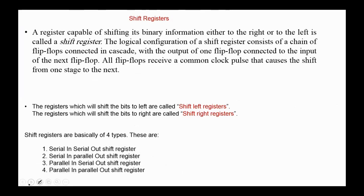Next, we move to shift registers. A register capable of shifting its binary information either to the left or to the right is called a shift register. On a shift-right register, each bit is moved to the right one position, while on a shift-left register, each bit is moved to the left one position. The logical configuration of a shift register consists of a chain of flip-flops connected in cascade, with the output of one flip-flop connected to the input of the next. All flip-flops receive a common clock pulse that causes the shift from one stage to the next.